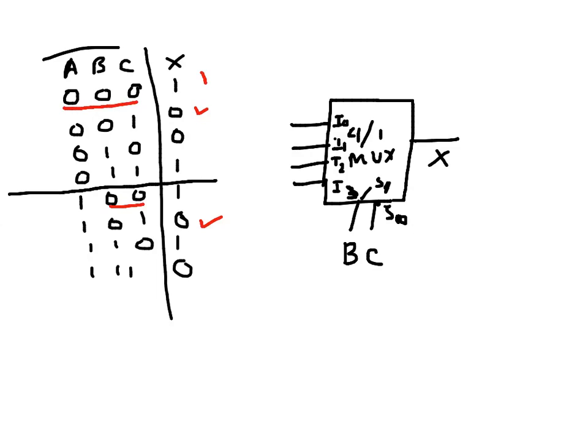To find what input to apply at I0, I look at the output for both rows where BC is 0-0. The output is 1 in both cases — whether A is 0 or 1 doesn't matter, the output is always 1. So I can safely apply constant 1 at I0.